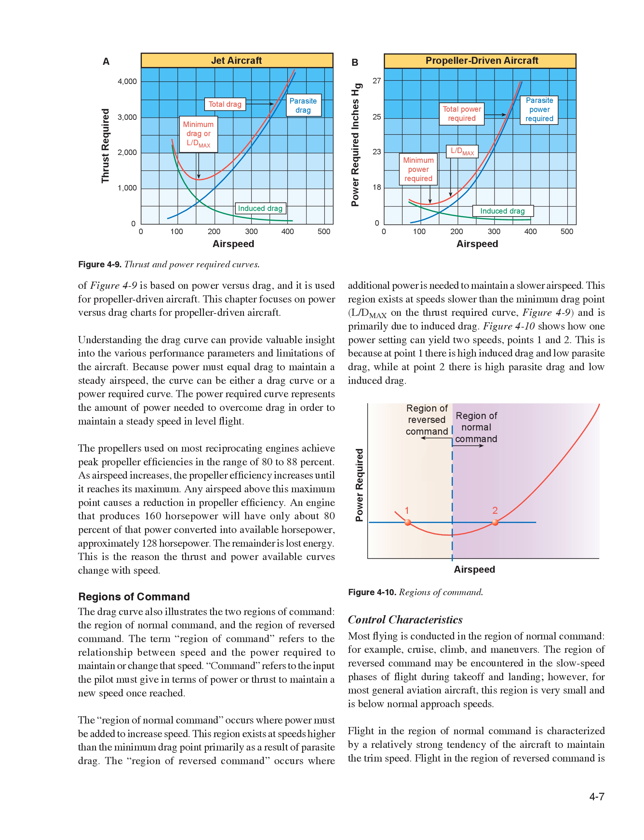The propellers used on most reciprocating engines achieve peak propeller efficiencies in the range of 80–88%. As airspeed increases, propeller efficiency increases until it reaches its maximum; any airspeed above this maximum point causes a reduction in propeller efficiency. An engine that produces 160 horsepower will have only about 80% of that power converted into available horsepower, approximately 128 horsepower. The remainder is lost energy, which is why the thrust and power available curves change with speed.